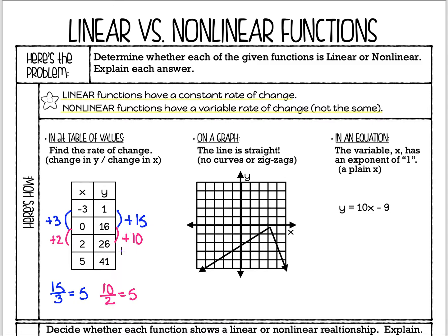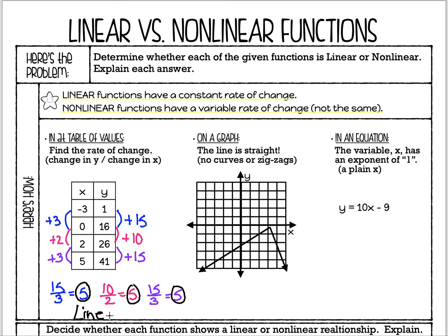Checking the next interval: from 26 to 41 is a plus 15, and over on the X side from 2 to 5 is a plus 3, giving us 15 over 3, which is positive 5 again. All intervals have the same rate of change of 5. You have to make sure you check the whole table, because the first two might work and the third might not. Since it's constant throughout, this is a linear function.